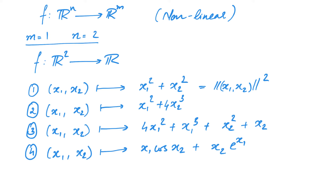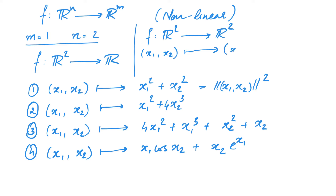And in this manner, we can construct as many functions as we want. Once we have enough functions from R² to R, we can also construct functions from R² to R². We simply take two such functions and combine them. For instance, we can look at the function taking (x₁, x₂) to (x₁² + x₂², x₁² + 4x₂³). This is one function from R² to R². Similarly, taking any two functions from the list, we can construct a function from R² to R².